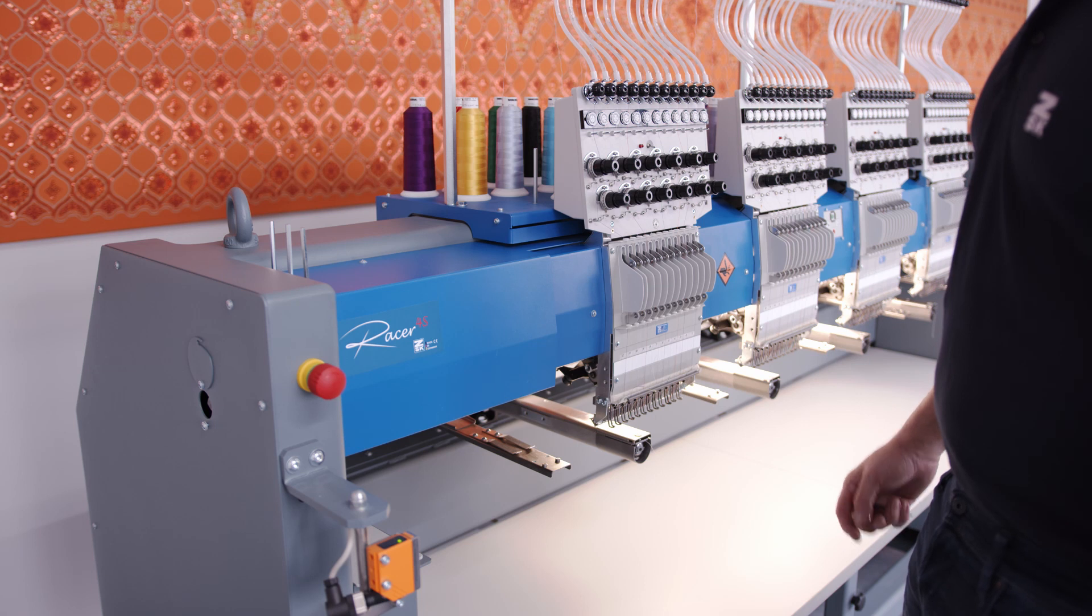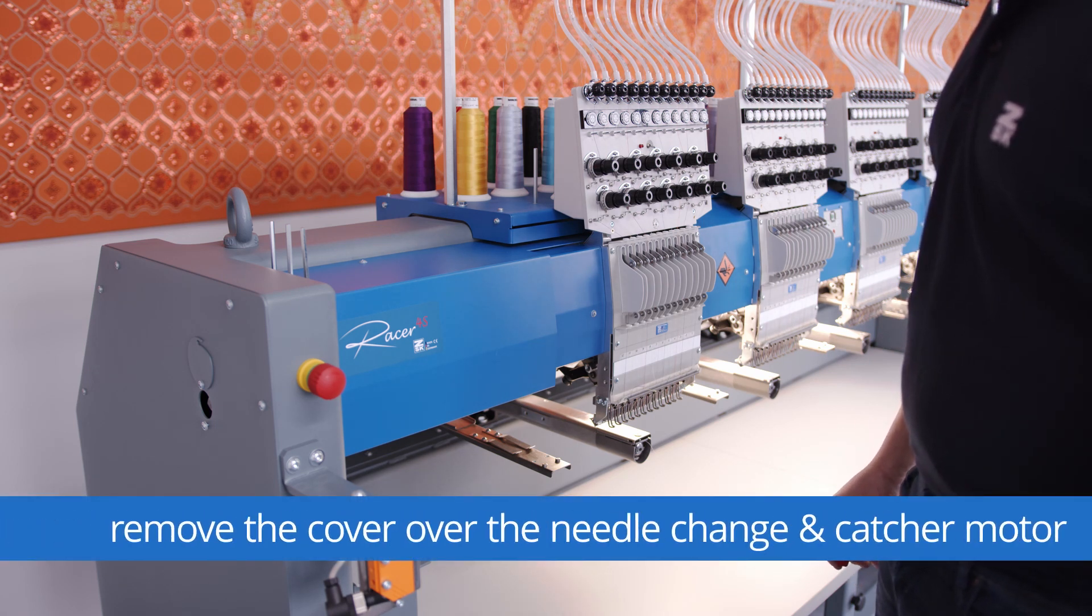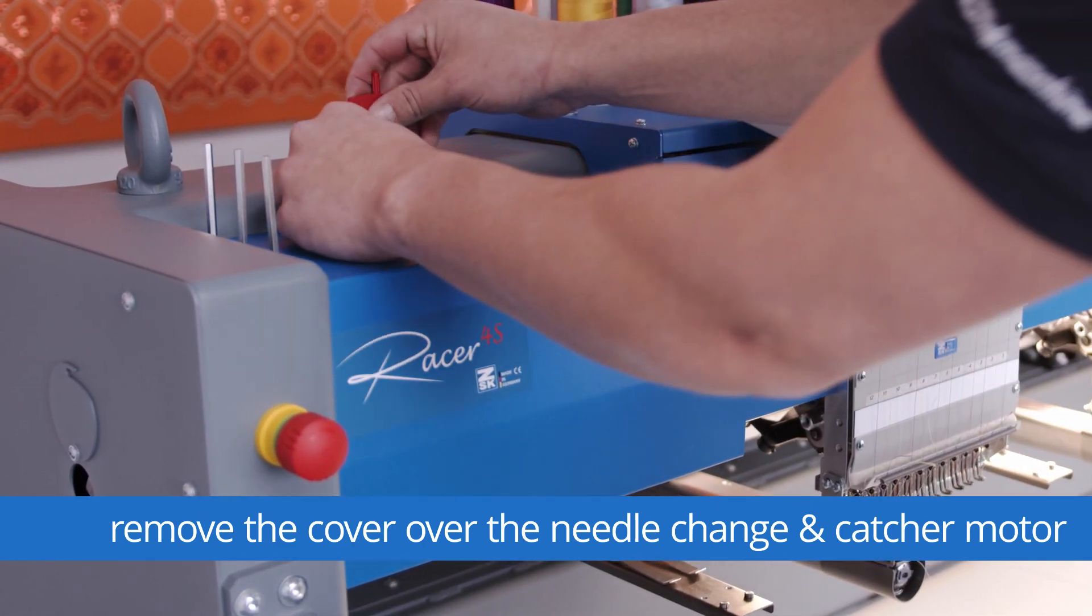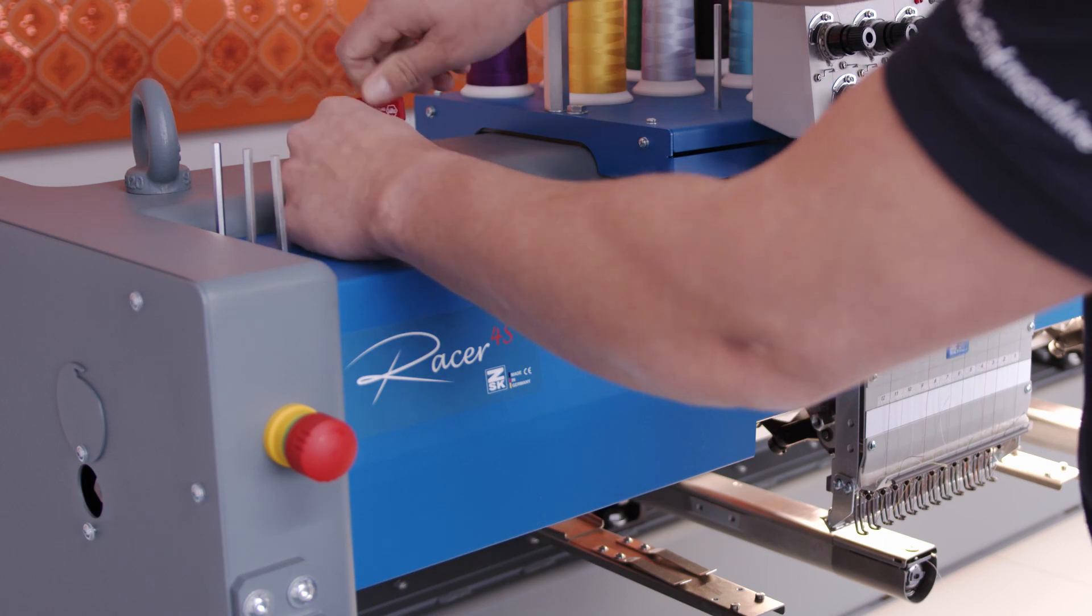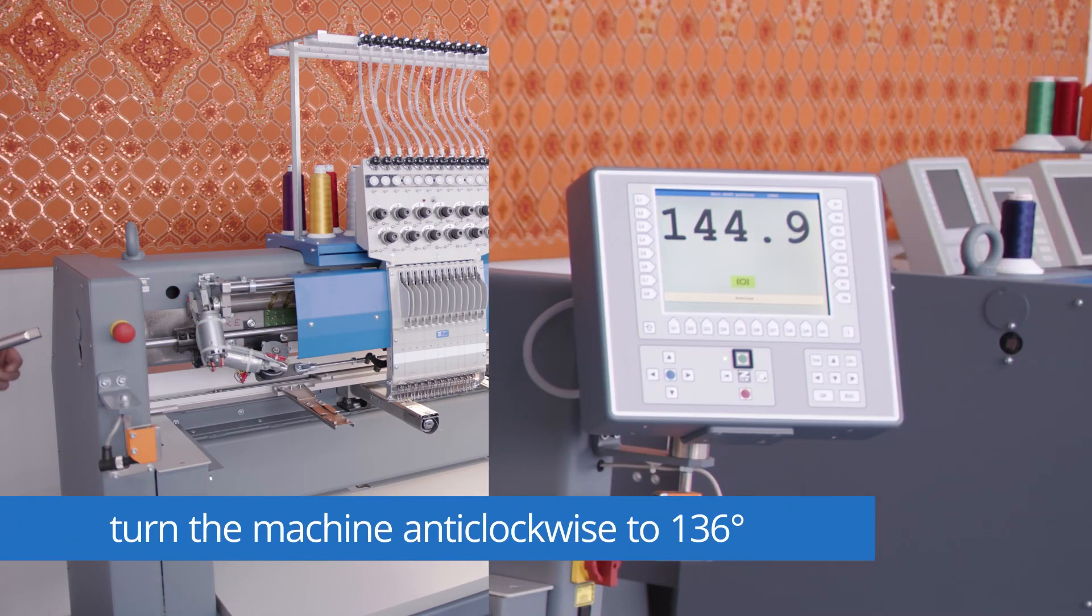After we have pinned the head and the machine is blocked in both directions we have to remove the cover over the needle change motor and the catcher motor. After we have slackened the two screws of the clamping ring, we are using the square wrench to turn the machine. Turn the machine anti-clockwise because that's the running direction of the machine and turn it to 136.